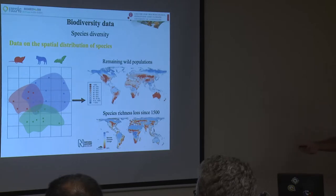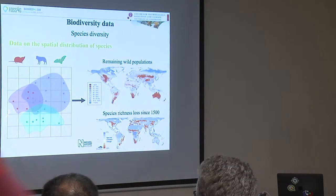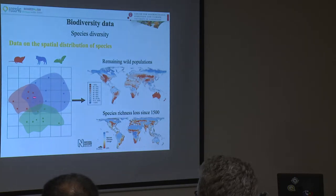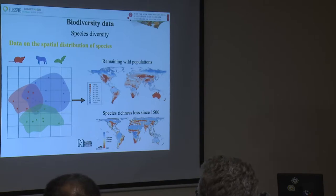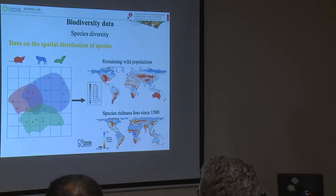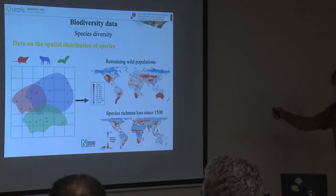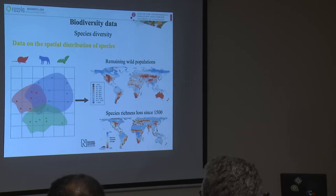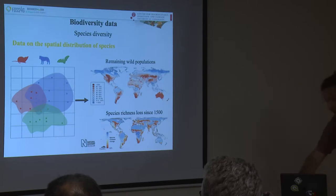This is how we create a typical species richness map: we take all these polygons and points, overlay a regular grid, and count the number of species in each cell. We come up with rather depressive maps — what we see here are estimates of the remaining wild populations, where red areas indicate regions with the largest declines. Another depressive map shows species richness loss since the 1500s. We're losing a lot of wildlife, sometimes without even having the chance to record it.